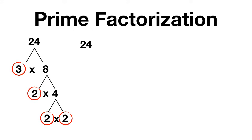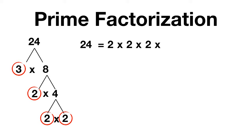We can write that 24 is equal to all of these prime numbers multiplied together: 2 times 2 times 2 times 3. No matter how you choose to split up 24, these are the prime factors you'll always get.